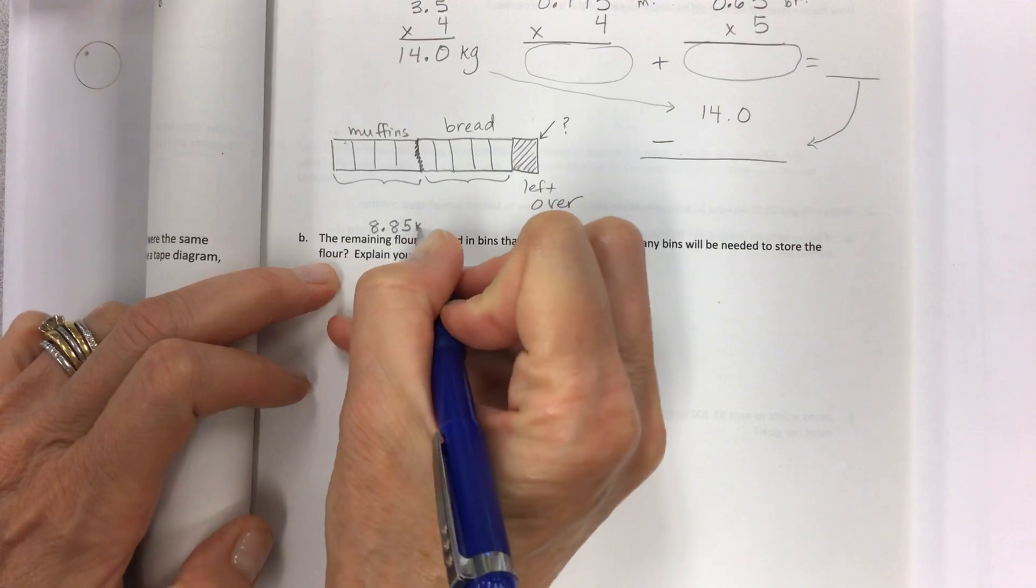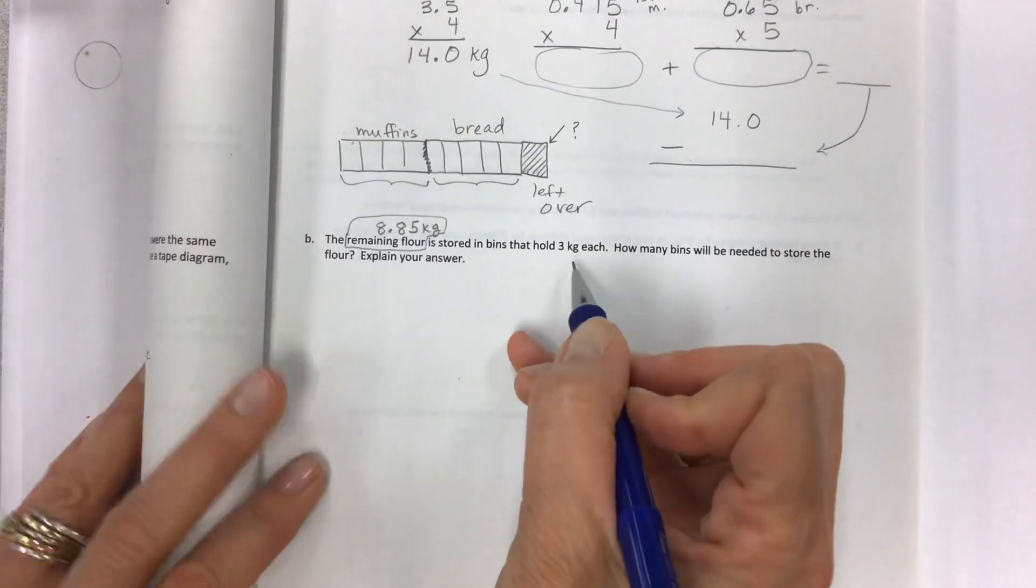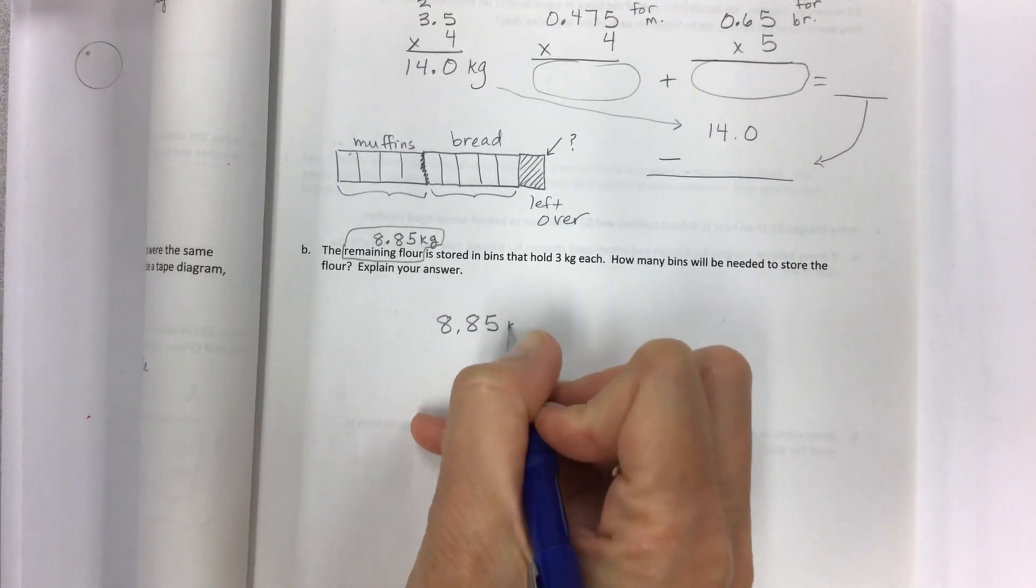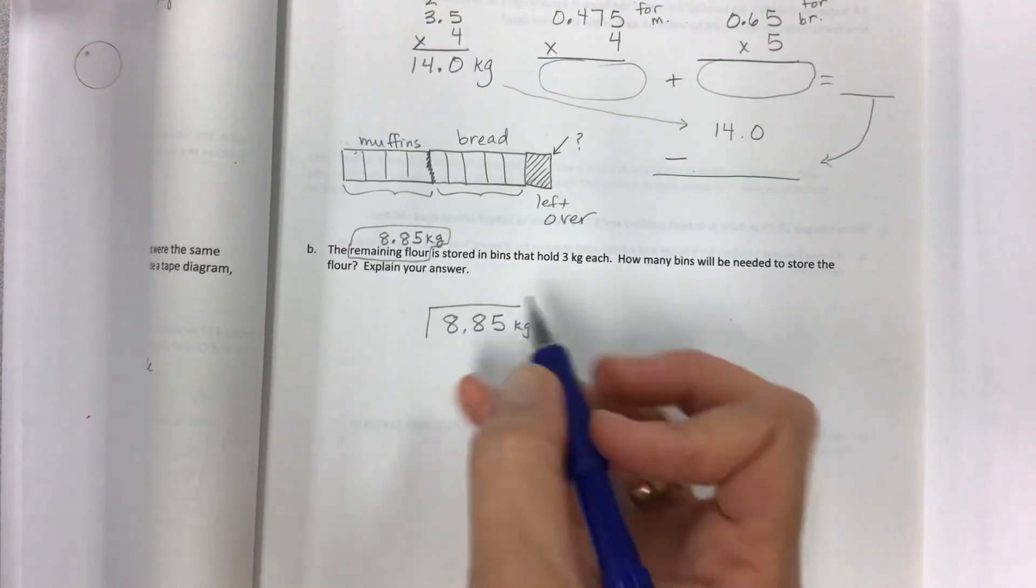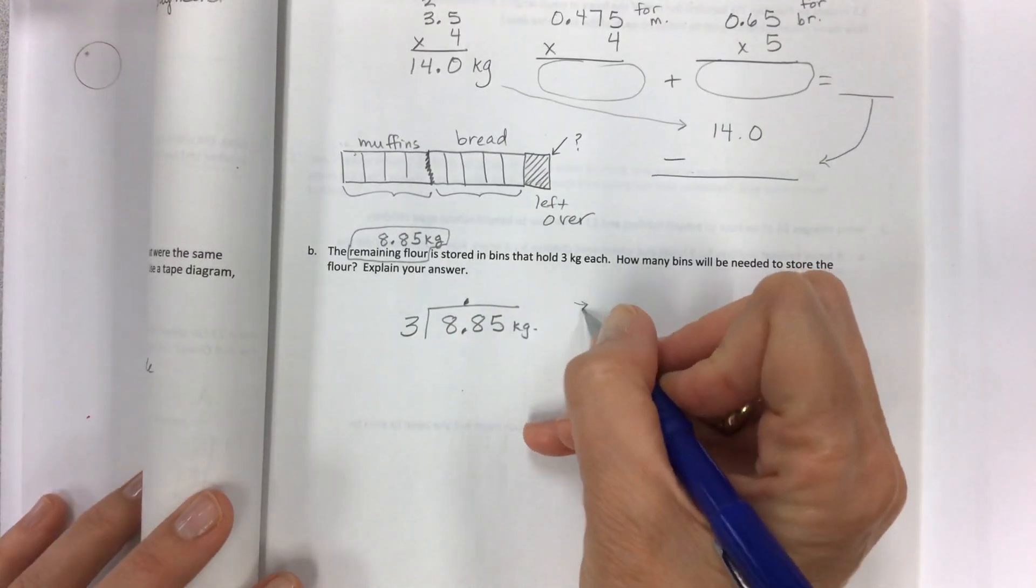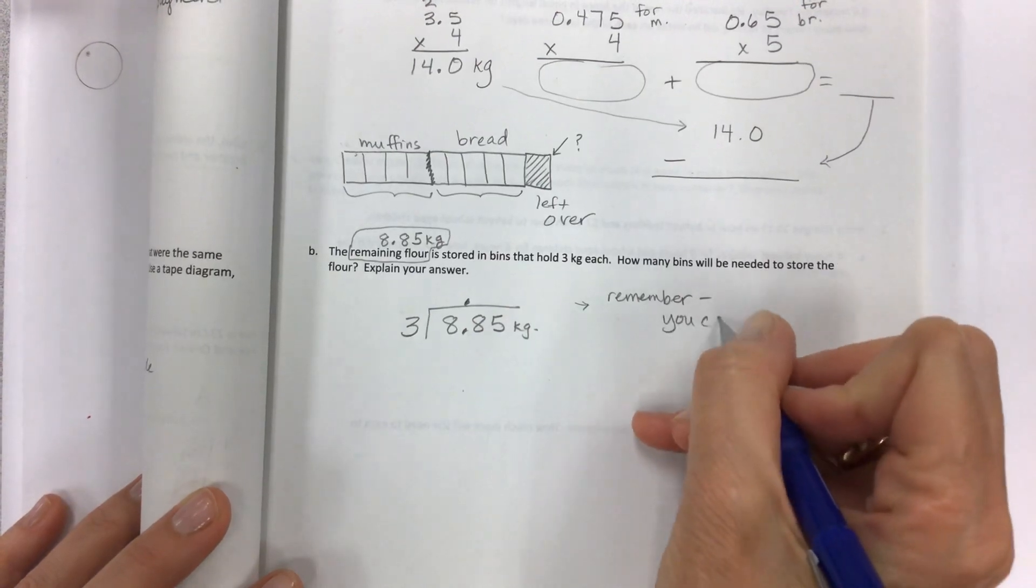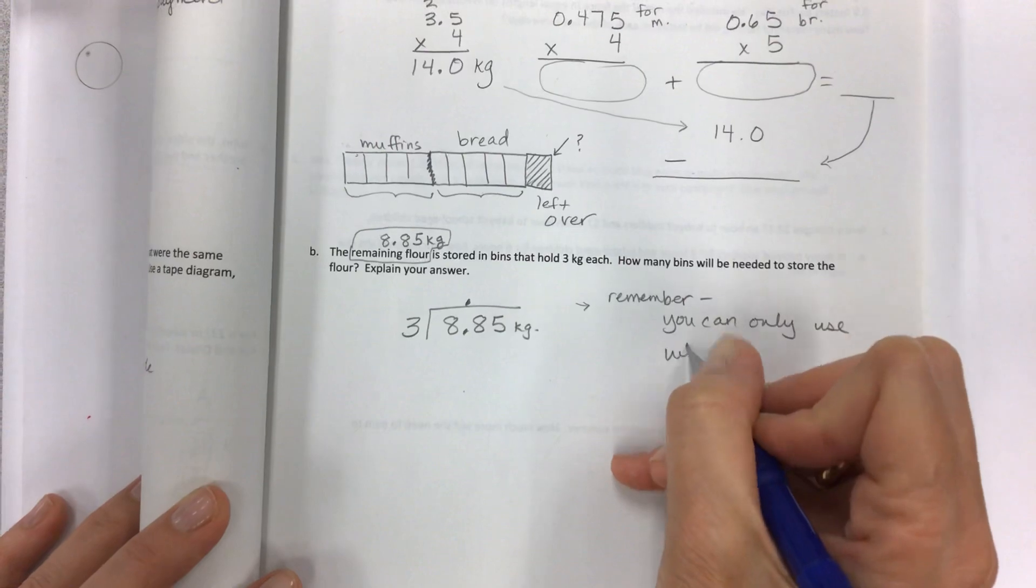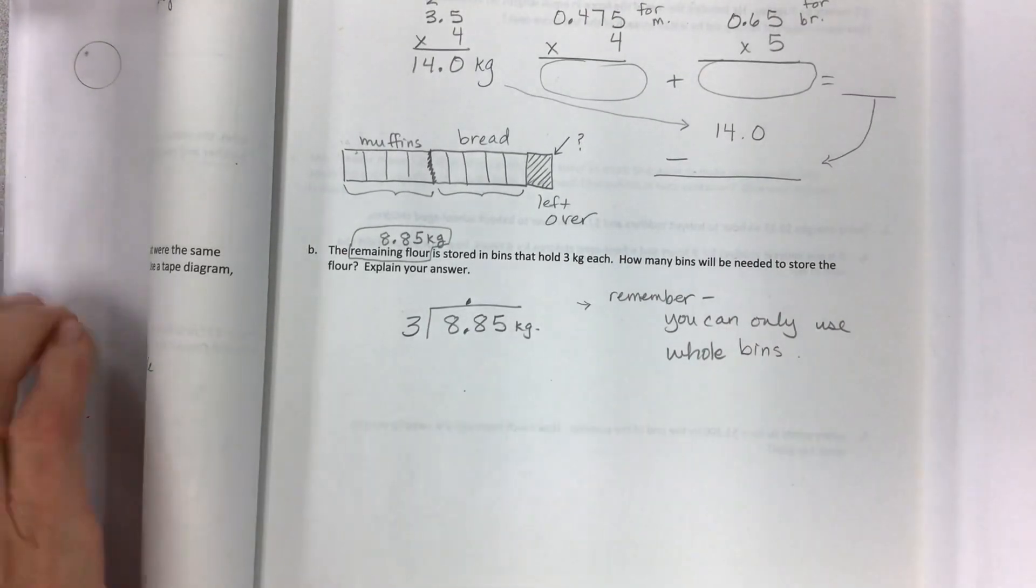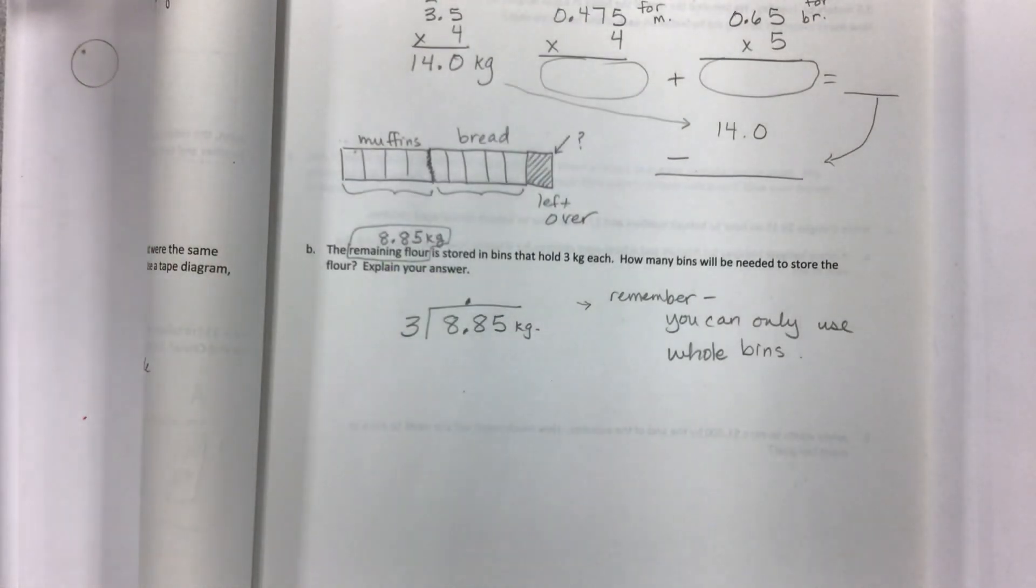Finally, the remaining flour - I'm just going to tell you right now it's 8.85 kilograms just so we can do this problem here. It is stored in bins that hold 3 kilograms each. How many bins will be needed to store the flour? Explain your answer. You're going to take your 8.85 kilograms and you're going to divide that by 3 kilograms each. Decimal up, do your division. When you get your answer, I want you to remember you can only use a whole bin. You're not going to cut it all apart, so what would your answer be? You might need to round it, so think about that. Good luck with all this work - it might take a few extra minutes to do the calculations, but I know you got this. See you soon.